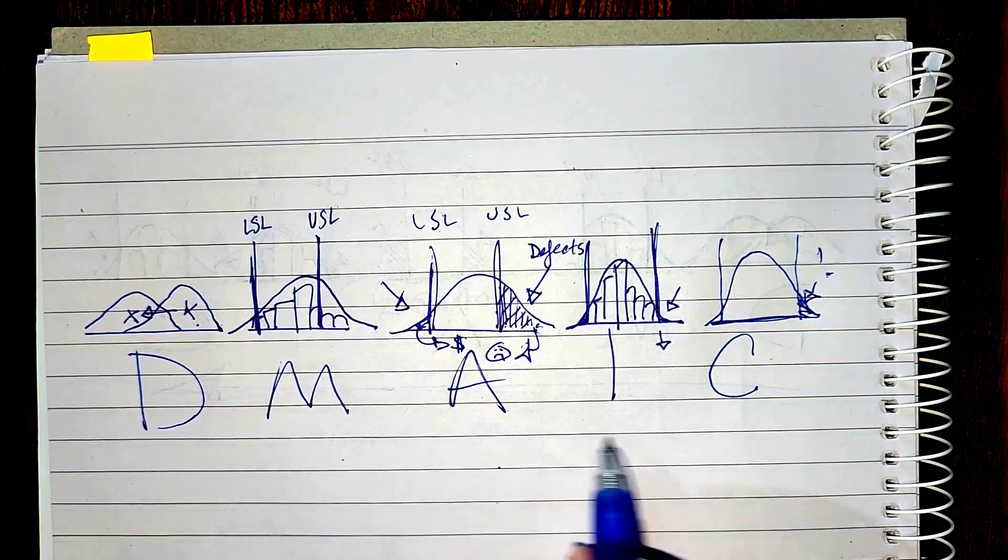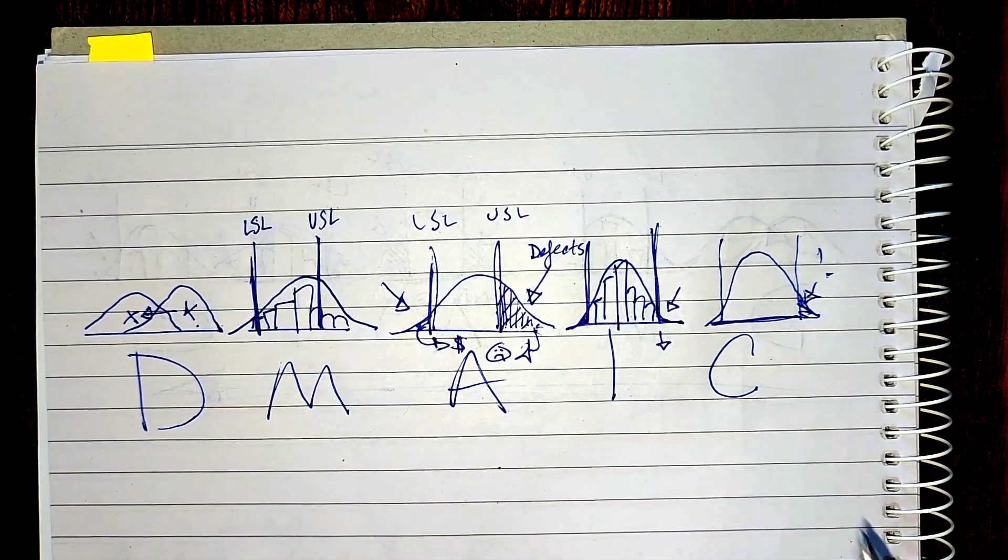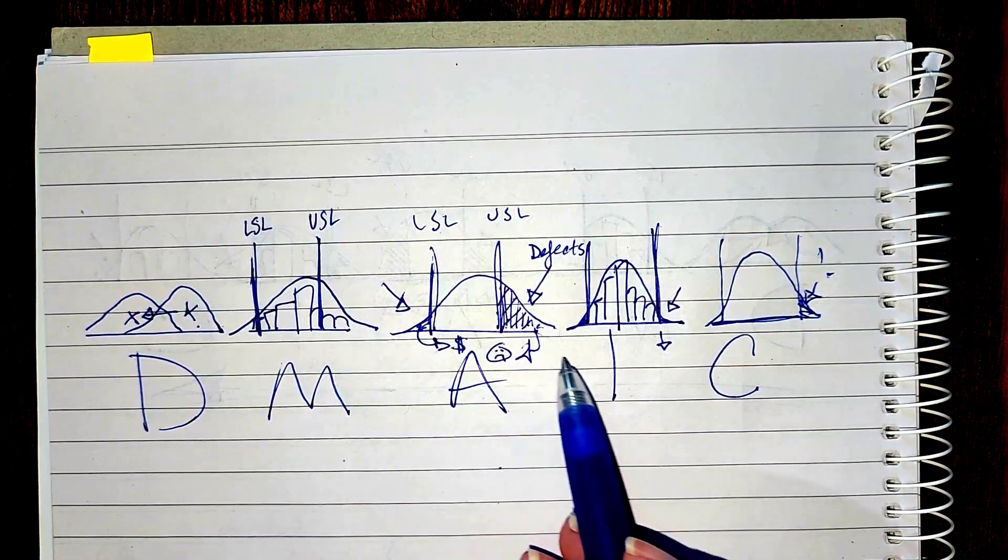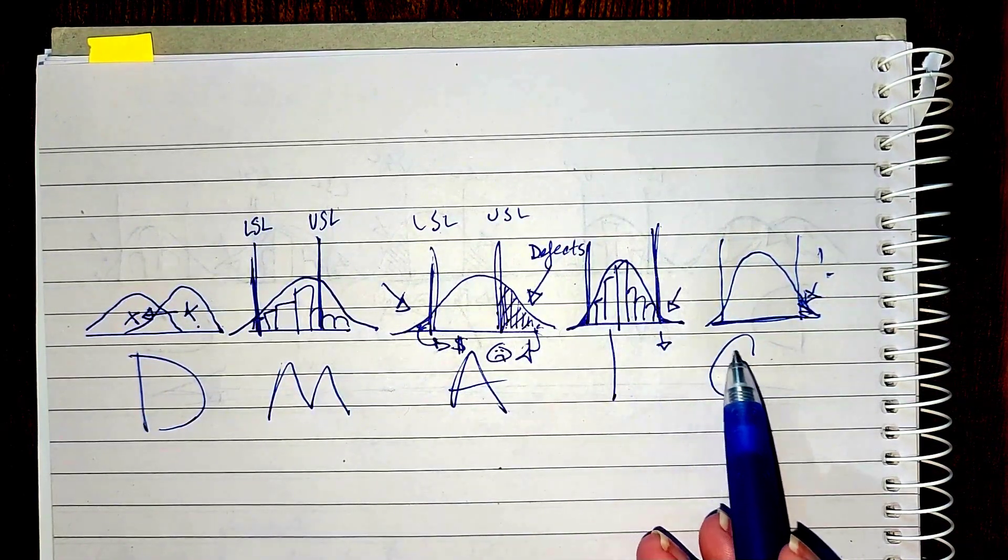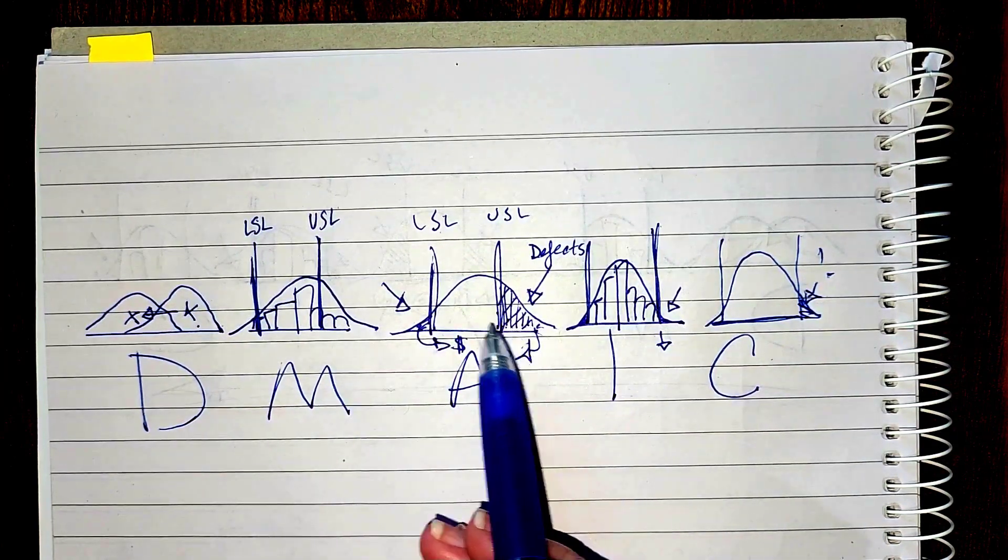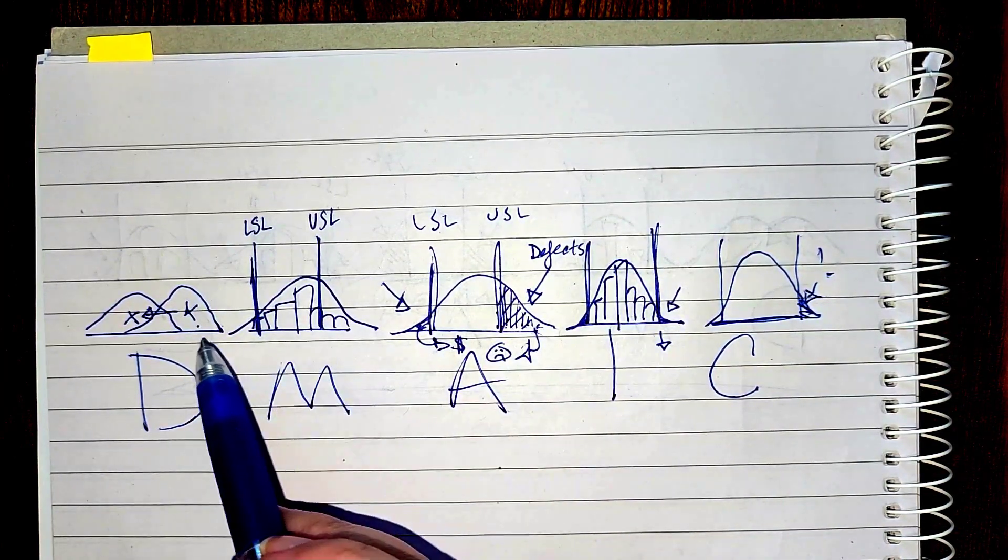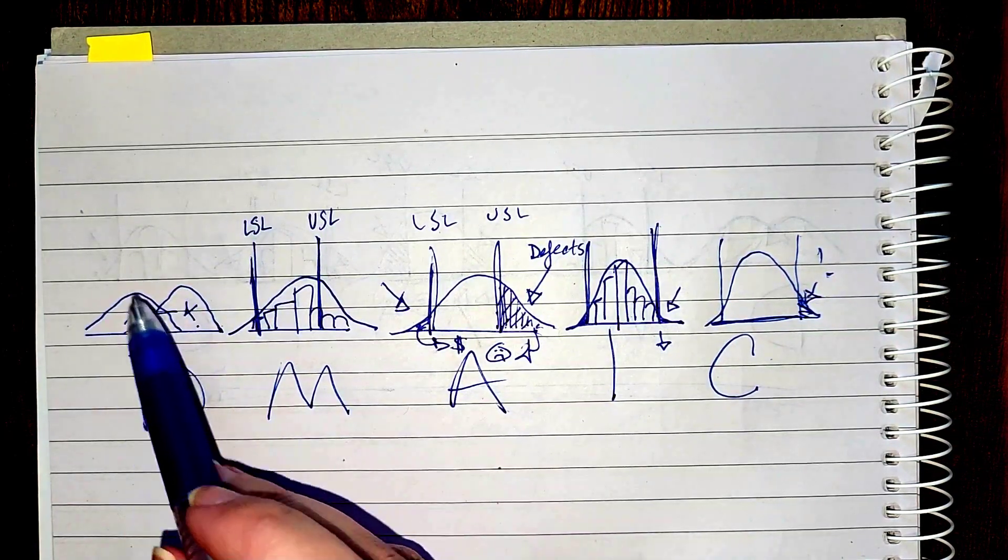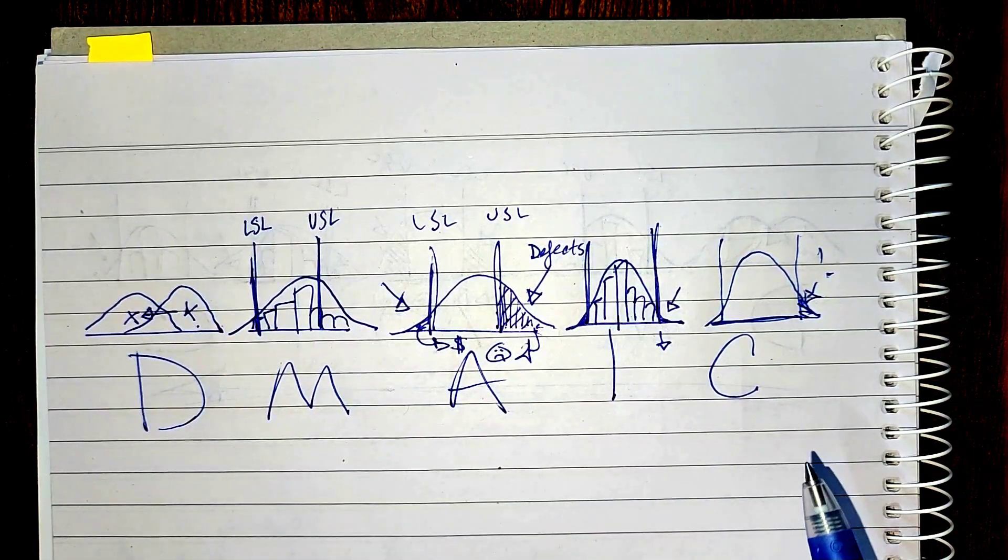And so as you go through your DMAIC project, as you work with your team, this is kind of in the background what's going on with the way that it's structured for you to move through that project, for you to be able to identify those defects that relate specifically to your customers expectations that you've defined, and achieve that goal that you set out to with the team.